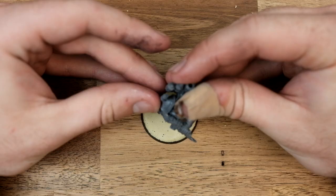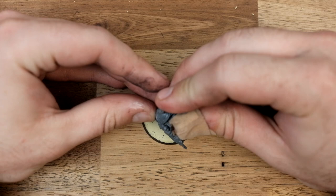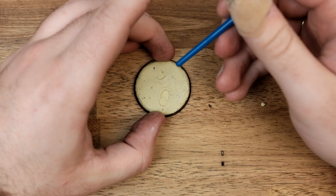I also like to push the model's feet into the putty and wriggle it around a little bit. It helps me position the model exactly how I want it, but it also makes the base look extra squelchy and soft and gross.